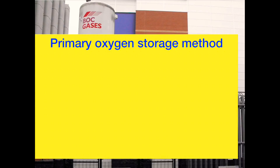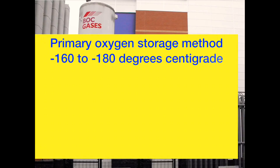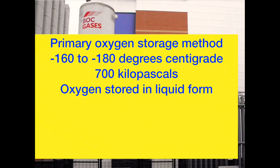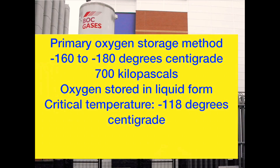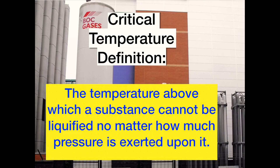The VIE is the primary method of storage in larger hospitals. It is kept at a temperature between minus 160 and minus 180 degrees centigrade. At these temperatures and a pressure of 700 kilopascals, the oxygen is stored in a liquid form, allowing more efficient use of storage volume. Oxygen has a critical temperature of negative 118 degrees centigrade, so it is mandatory that the oxygen be cooled below this to be stored as a liquid.